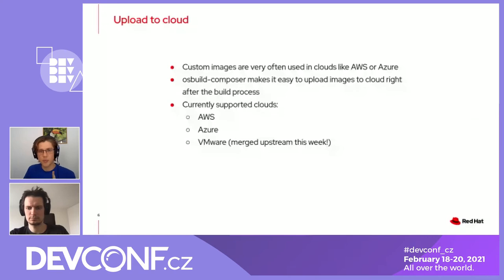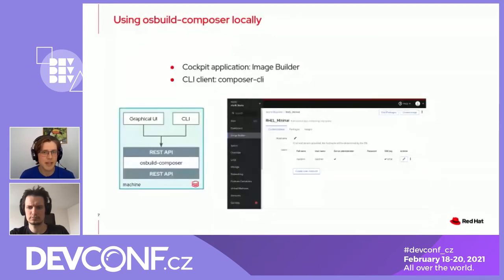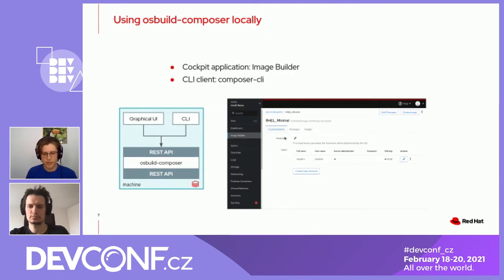I think you are now pretty excited about our project and want to try it. So how do you use it locally? You have two options. One is graphical, the second one is in terminal. The graphical option is an application in Cockpit called Image Builder, or the package is named Cockpit Composer. You can click around in the GUI, add packages, add users, and then use a simple wizard to upload to AWS, Azure, or VMware in the future.